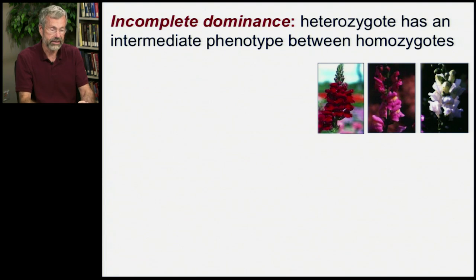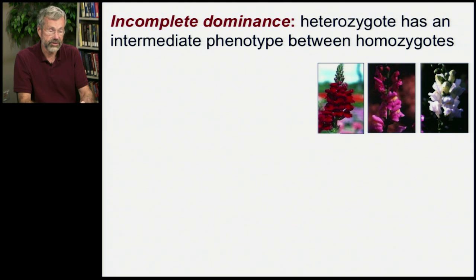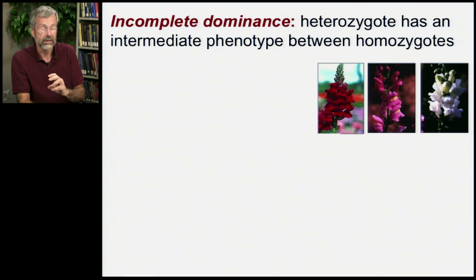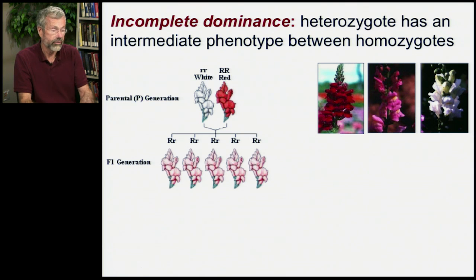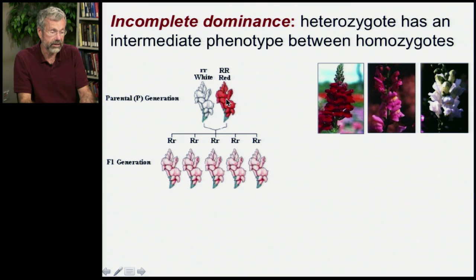Let's look at snapdragons. A homozygote with a red allele has red flowers, so those are red snapdragons. A homozygote for the white allele is white, but the intermediates are pink. So if we take a white snapdragon and a red snapdragon — they're both homozygotes for the different alleles — all their offspring will be heterozygotes and they'll all be pink.